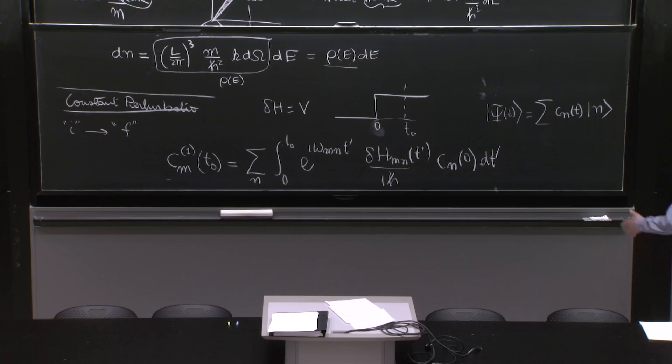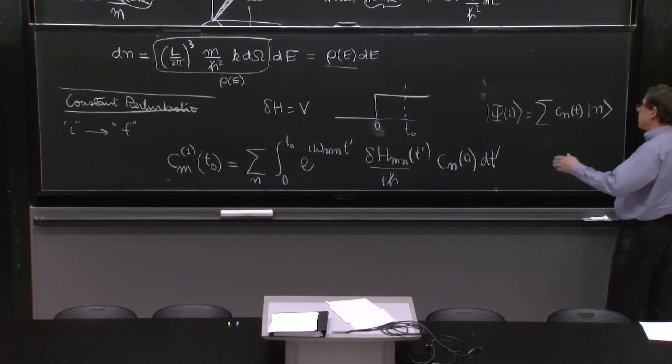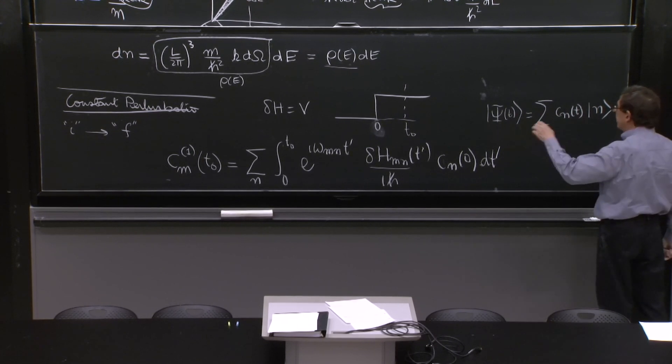And we calculate those in perturbation theory. So c n's, we know them at time equals 0. We imagine we know the initial state. And we want to calculate them later.